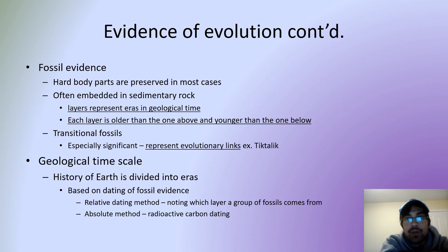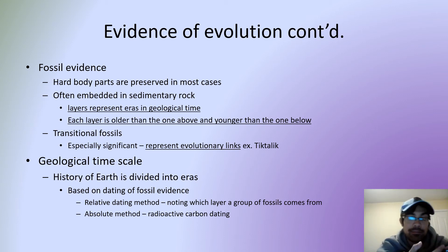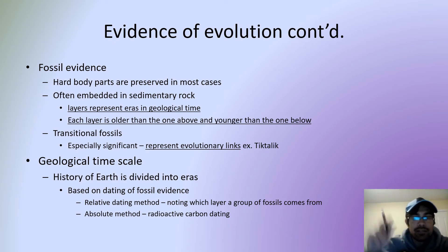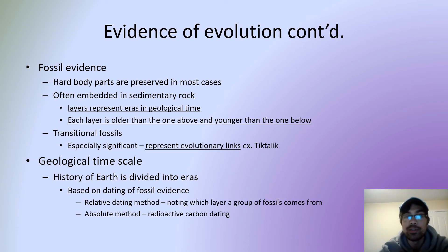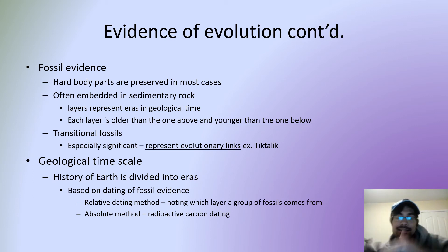There's also fossil evidence. Harder body parts like skulls and bones can be preserved — they settle in the ground, sediments build up over them in layers, and each layer represents a different time period. The further down you go, the older it is. When you compare fossils you see similarities and gradual changes happening. There are also transitional fossils, which are quite significant — they're kind of in between the original ancestor and the descendant, like links between certain species.